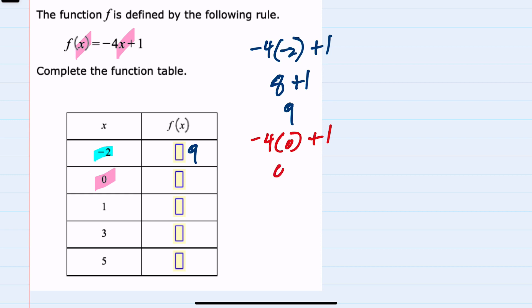-4 times 0 is 0, plus 1 is 1. So we found f(0). Moving to 1.